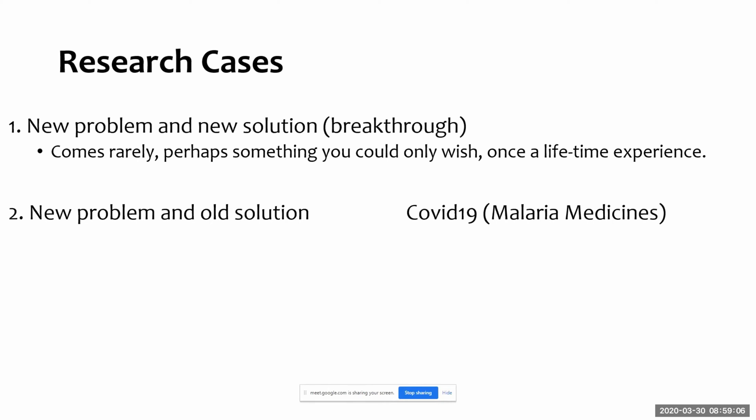Case two is new problem, old solution. You see a new problem in the world and you bring an old solution for it. For instance, COVID-19 — it's a new type of virus nobody has seen before. Because there's no vaccine for it, people are trying old solutions: current medicines being tested are from malaria, cold, or flu treatments. New problem, old solution — that's fine to do.